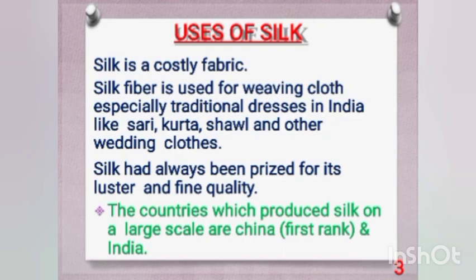The last topic in this chapter is occupational hazards — the hazards workers may suffer when working in a particular industry. Since this chapter covers two animal fibers, wool and silk, workers in both industries may suffer from diseases. Workers in the wool industry may suffer from anthrax, caused by the bacterium Bacillus anthracis present in the animal hairs. They may also suffer from skin rashes and respiratory tract diseases, as hairs from wool-giving animals can enter the respiratory tract.